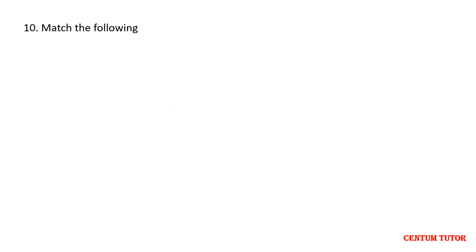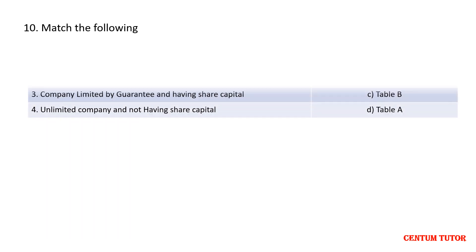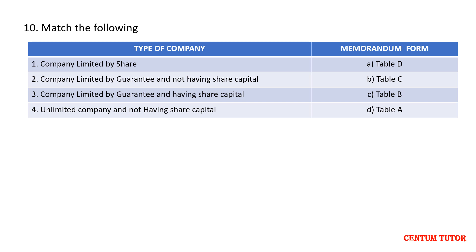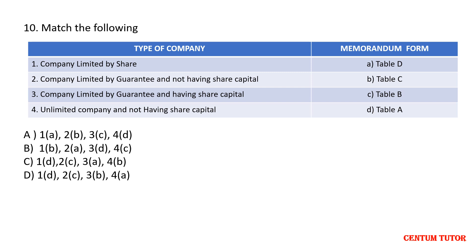Question number 10: Match the following. Company limited by share — which memorandum form or table is used? Company limited by guarantee and not having share capital; company limited by guarantee and having share capital; unlimited company not having share capital. Match these to their respective tables. The answer is D.